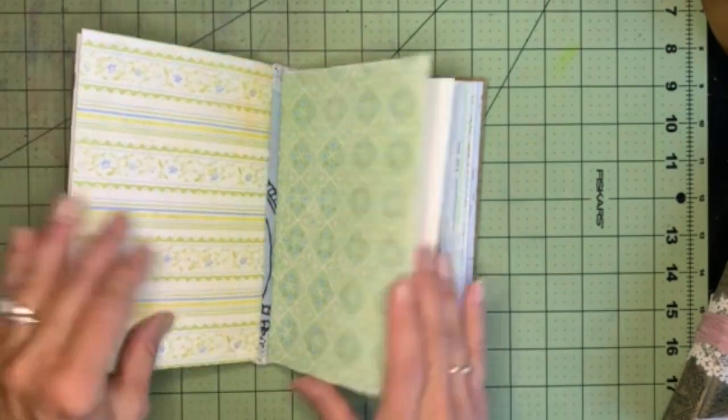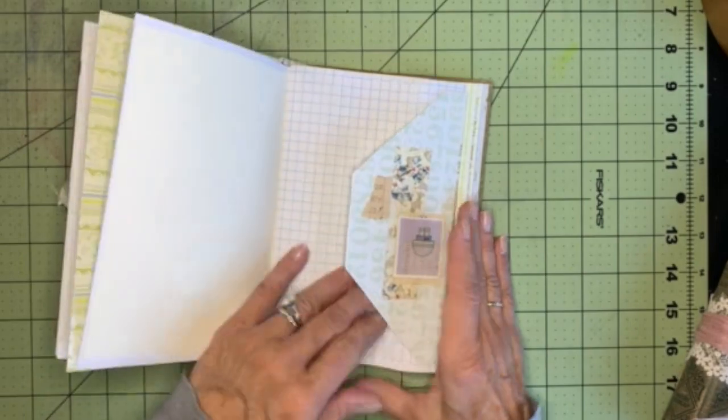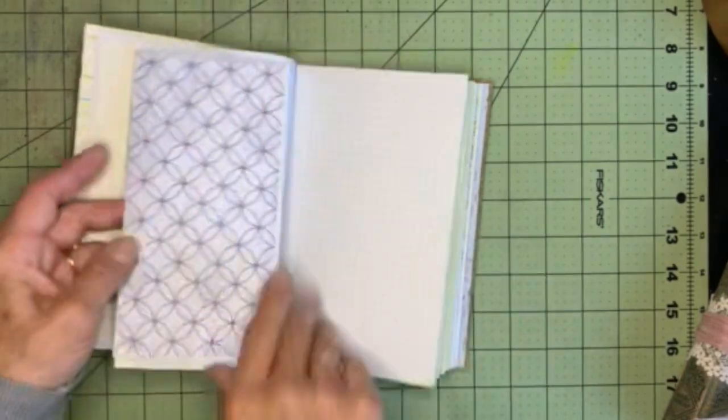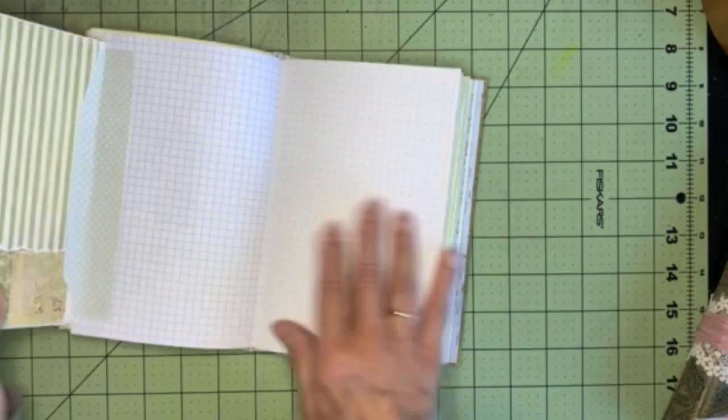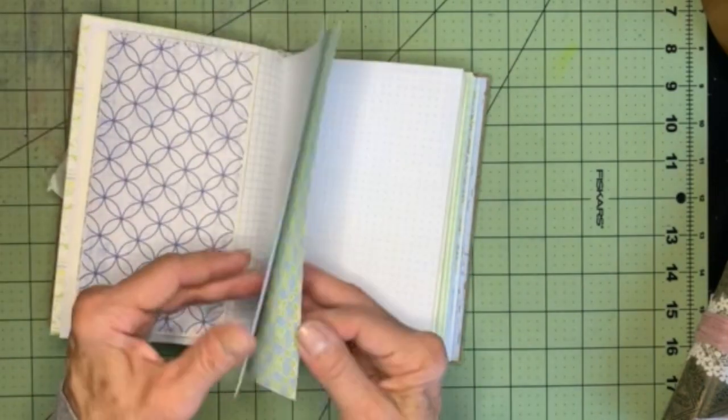Pockets to tuck things in. This is a tuck here and then on the other side it's actually an envelope.